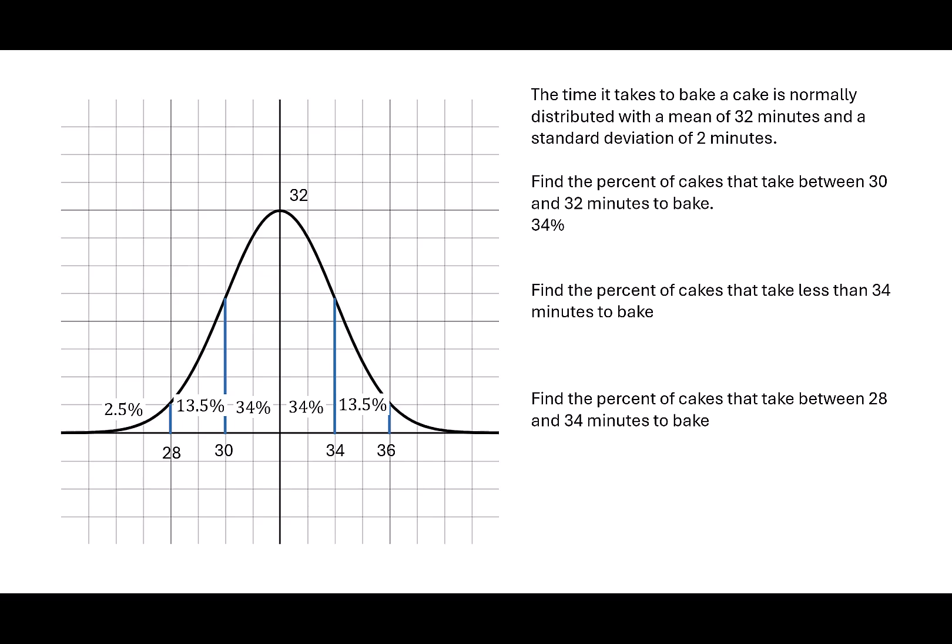Next, let's find the percent of the cakes that take less than 34 minutes to bake. When I look at the 34, I can see between the mean of 32 and the time of 34, 34 percent of the cakes take this amount of time. Then anything less than 32 represents 50 percent of the data.